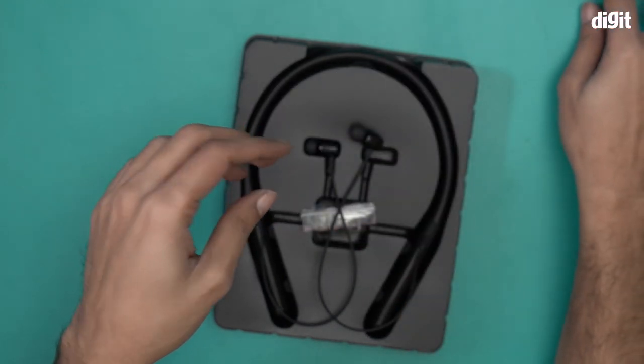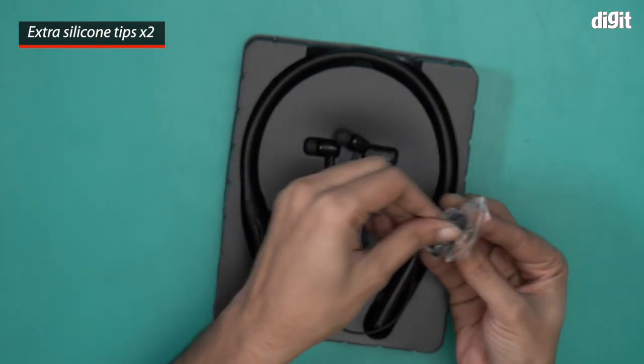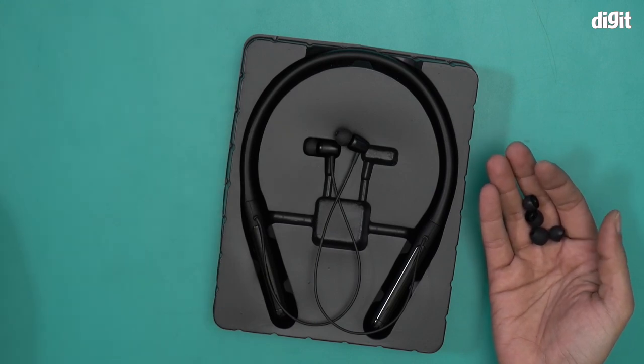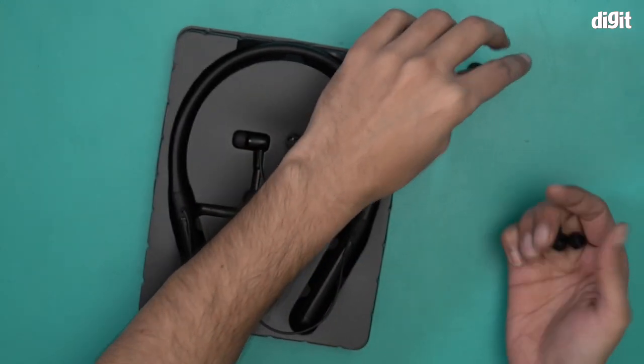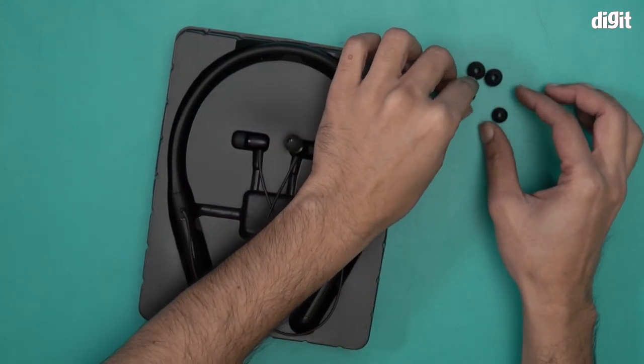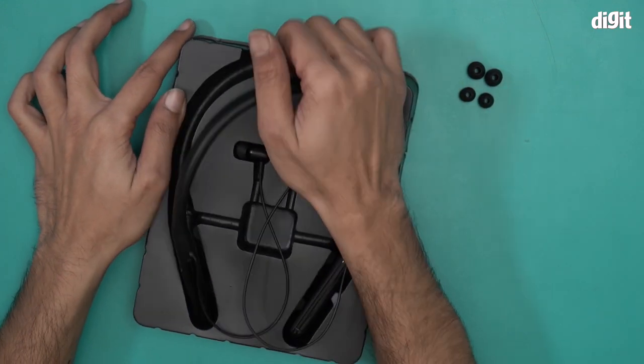And this is a packet of silicone tips, extra silicone tips. There are four of them, basically two pairs. One should be the large one and the other is a small one. Let's quickly take a look. This is your large variant and these are your small variant. There you go, and let's take a look at the neckband now. This is what it looks like.